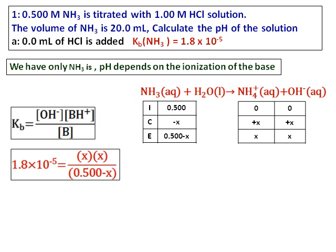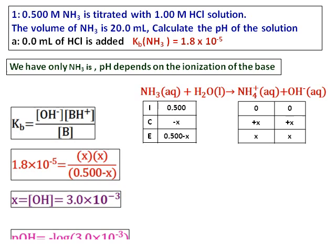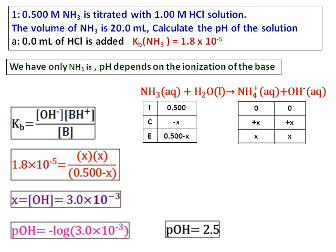Substitute the value of the ammonium ion (BH⁺) and the base (B) into the Kb equation, then get the value of X. Because the value of Kb is 10 to the power of negative 5, I can use the small K approximation to get X, which is the hydroxide ion concentration. From that I can calculate the pOH, and that gives me the value of pH.